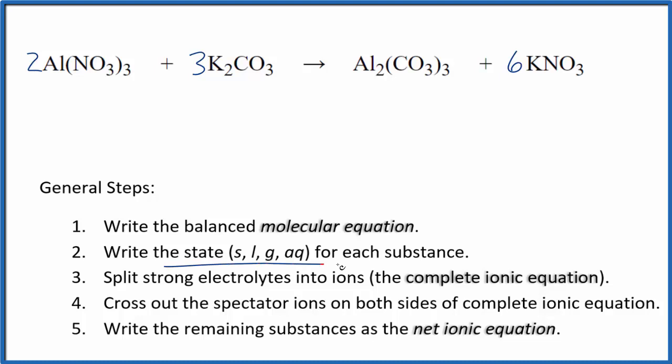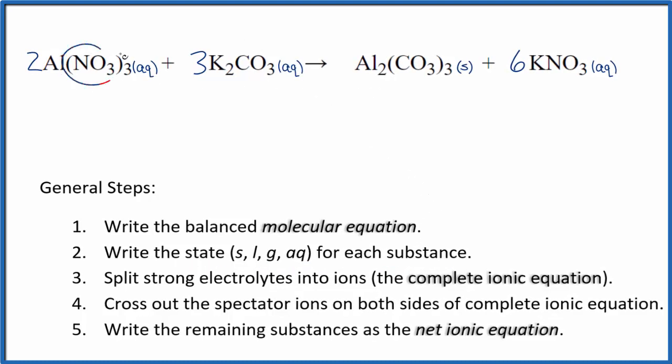Now we can write the state for each substance. Compounds with the nitrate ion are very soluble, and compounds with potassium in them are also very soluble. The carbonate here, in general carbonates are insoluble. Potassium carbonate is an exception, but aluminum carbonate is insoluble. So when these two substances react, we'll get this solid and it'll fall to the bottom of the test tube as a precipitate.